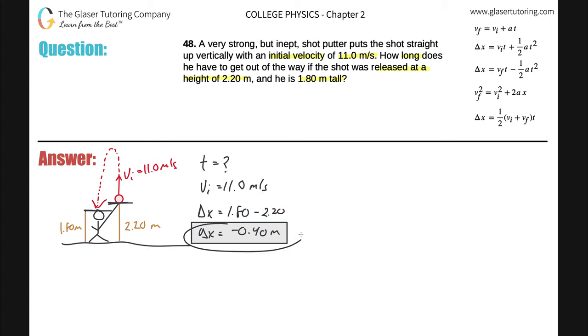We know the initial velocity, we know the displacement, we don't know the time. At the moment we cannot use any formula to calculate. However, whenever an object is in the air, gravity is always acting on it. The force of gravity is always pulling this ball down, therefore the acceleration of this ball is going to be negative 9.80 meters per second squared. Any time an object is in free fall, experiencing only the force of gravity, that's the acceleration.